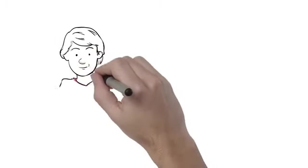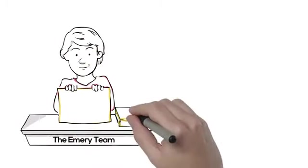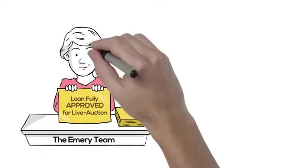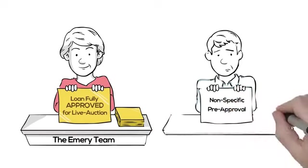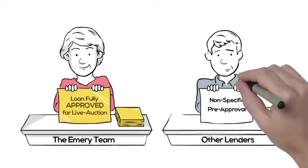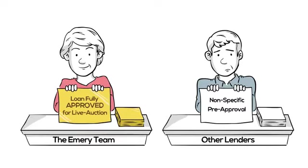The process of the Emory live auction loan was engineered to fit the auction process so your loan is fully approved in 5 business days prior to registering to bid. The non-specific pre-approval from the typical lender does not work when bidding in a live auction.